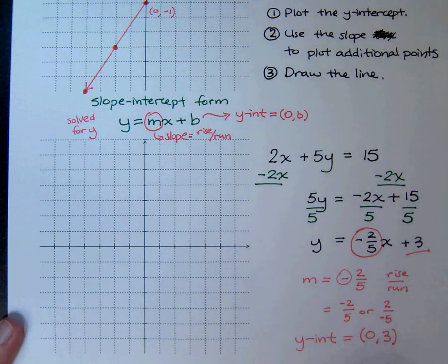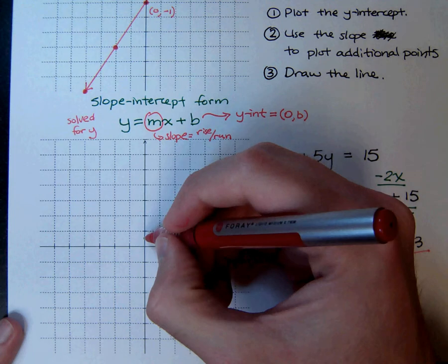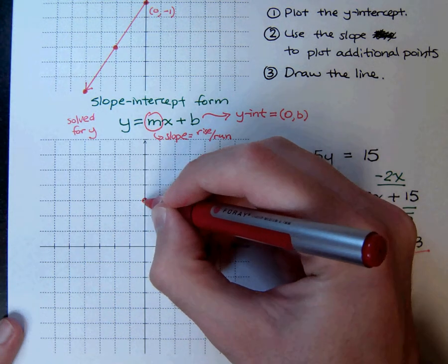So now, how do we graph this? Going back to the steps. The first step is to plot the y-intercept. The y-intercept is 0, positive 3. So, 0, positive 3.